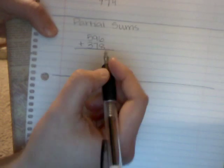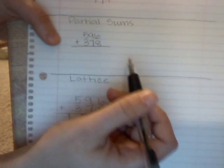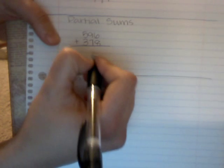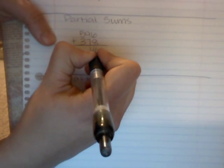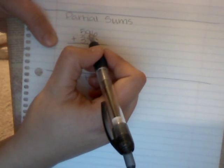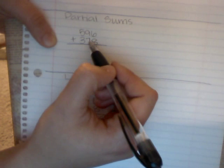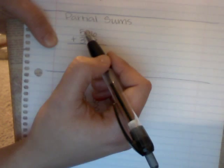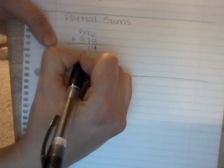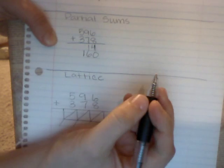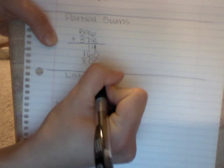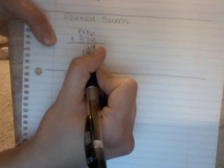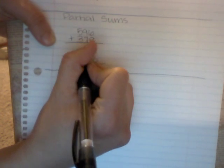This one we're going to do partial sums. The way you do this one is 6 plus 8, and instead of carrying the 1 like in the first method, we're just going to write 14 down here. Then we'll do the tens place, so 90 plus 70 is 160. Then the hundreds place, which is 500 plus 300 equals 800. Then you add all this together, so the ones place is 4, the tens place is 7, and the hundreds place is 9, so we get the same answer.